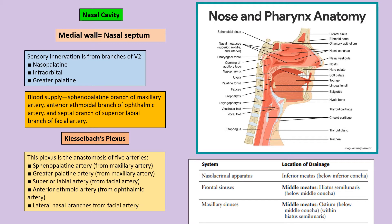This is important: Kiesselbach's plexus is an anastomosis of five arteries, and it is important because epistaxis — nosebleed — nearly always occurs from this Kiesselbach's plexus. Also remember that the maxillary sinus is lined by the Schneiderian membrane, which is a type of pseudostratified columnar epithelium.